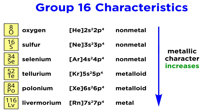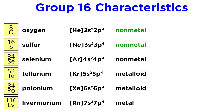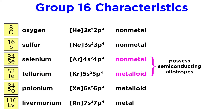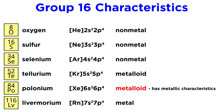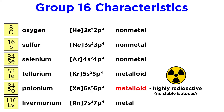While metallic character increases going down the group, oxygen and sulfur are strict nonmetals. Selenium is characterized as a nonmetal, but along with tellurium, the metalloid below, these two elements have semiconducting allotropes. Polonium is also characterized as a metalloid, though it is distinctly metallic in some ways. It is highly radioactive and has no stable isotopes.